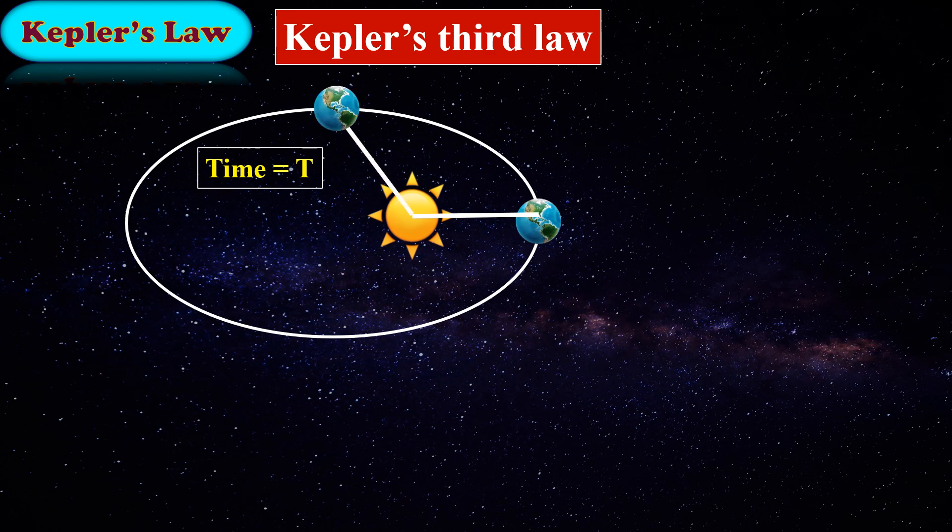This distance will vary according to the different positions of the Earth. Due to this reason, we will take the average distance equal to r.